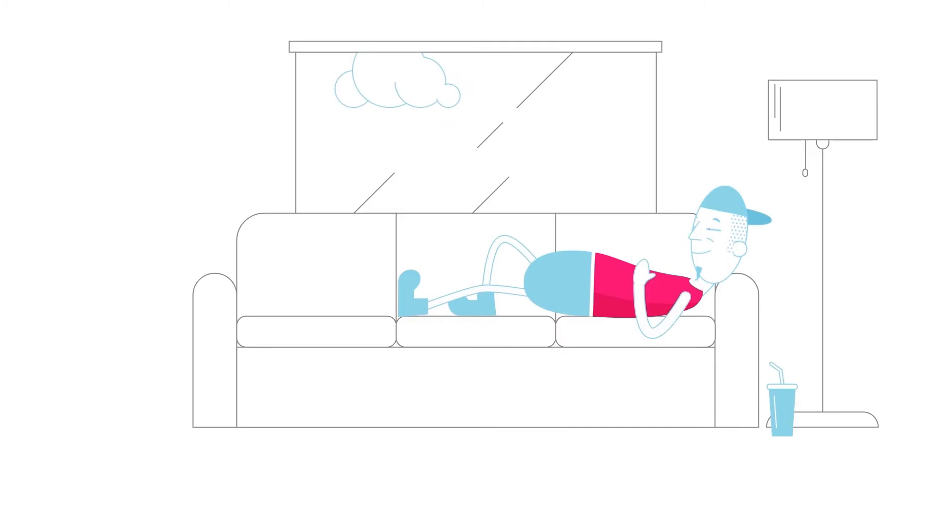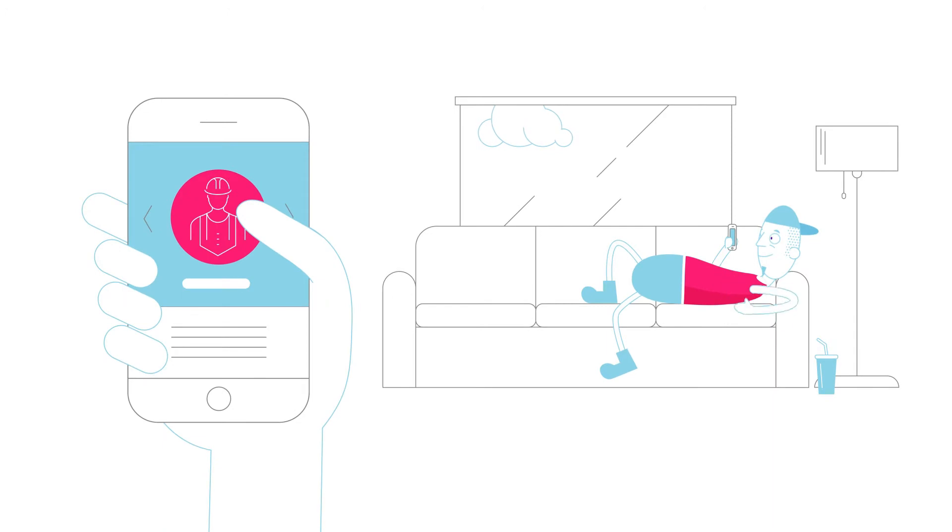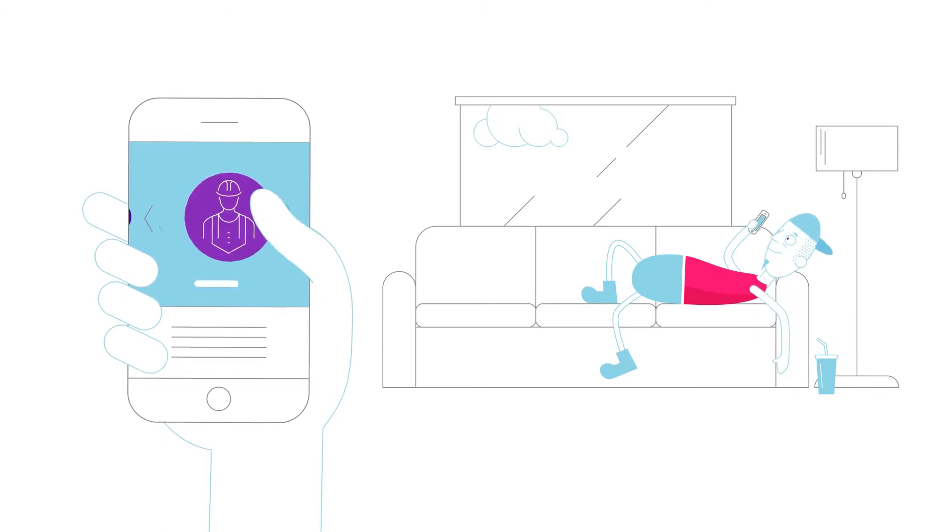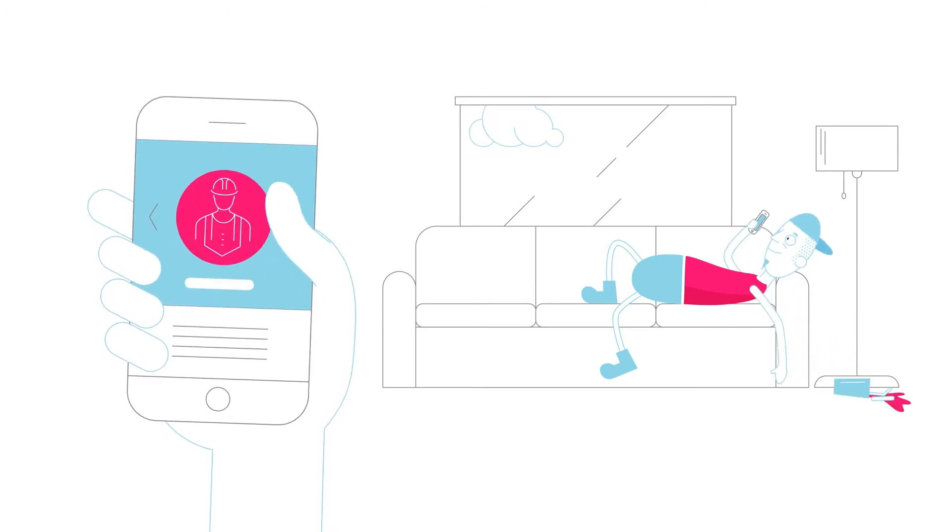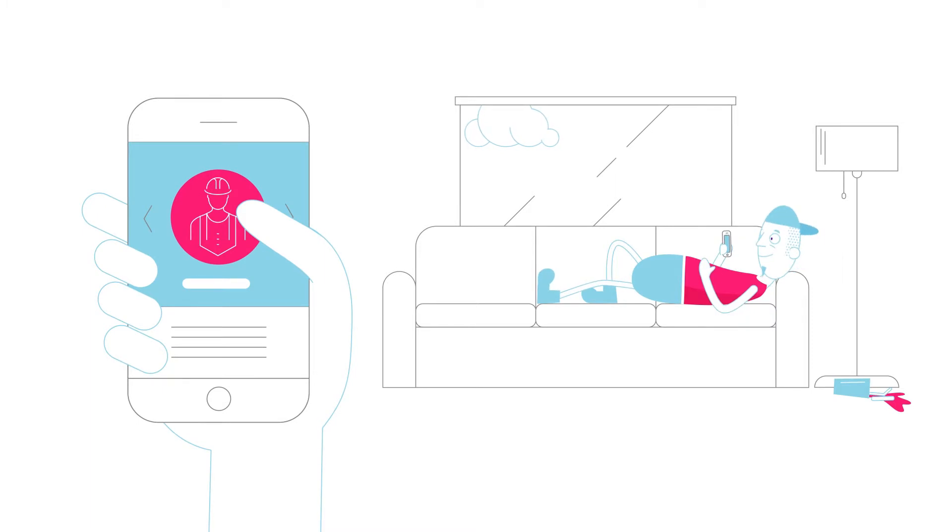So how do you get a job? You could sit back and wait for it to happen. Good luck with that. You could use the BCITO job matching service. Sweet! But we can't guarantee we'll find you a job. That's up to you.